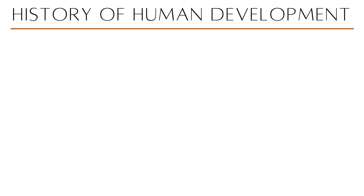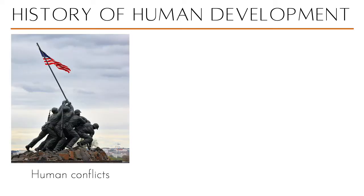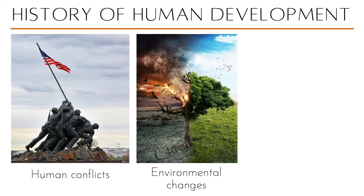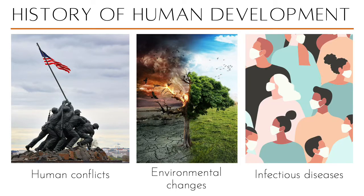It has been said that the history of human development was defined by three things. Number one would be human conflicts — this would lead different civilizations into discovering a lot of things. Another thing that affects human development until now would be environmental changes, things that we cannot control, and we are continuing to see the consequences of changes in the environment from decades ago. The last thing would be the emergence, prevalence, and re-emergence of infectious diseases.